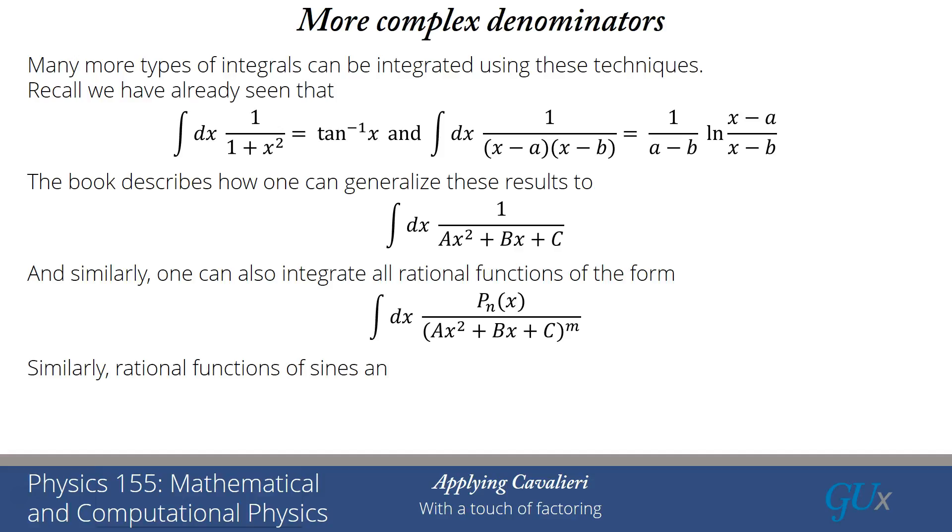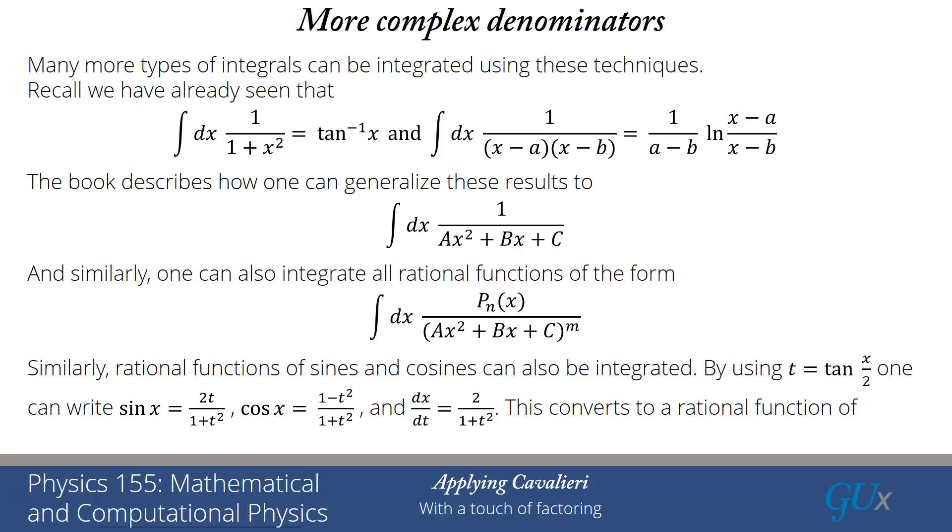Another point is that if I had any rational function of sines and cosines, they also can be integrated. The strategy here is by defining t = tan(x/2), we can then write sin x = 2t/(1 + t²), cos x = (1 - t²)/(1 + t²), and dx/dt = 2/(1 + t²). So we can convert the integral over x into an integral over t, and that integral over t involves now a rational function of t. Because I have powers of 2t, I have powers of 1 + t², 1 - t², etc. But it's ultimately going to just be a rational function of t. We've just shown you that whenever we have rational functions, we can integrate these things. So all rational functions of sines and cosines can also be integrated by using this trick.